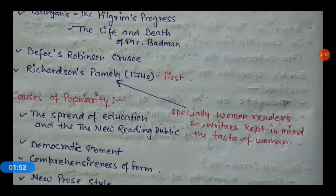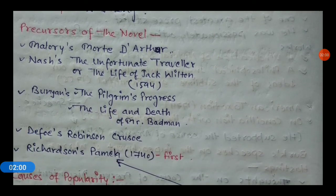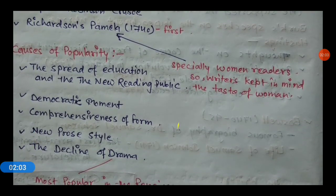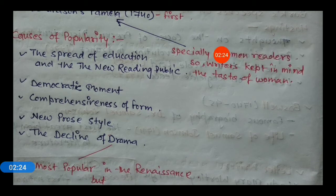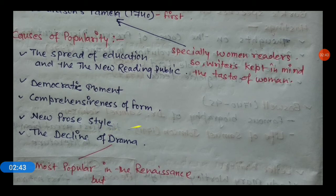This is the development of the novel. The causes of popularity of the novel include the spread of education and the new reading public. This was a time when education was growing and people were becoming literate, leading to a great increase in the publication of novels. Democratic movements, comprehensiveness of form, and new prose styles also contributed.